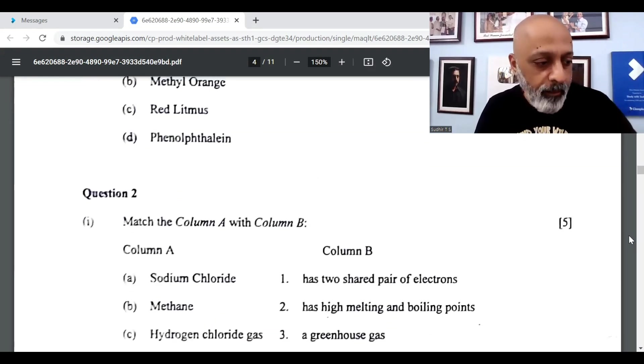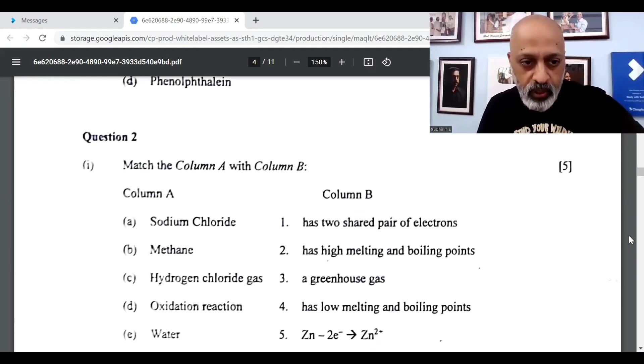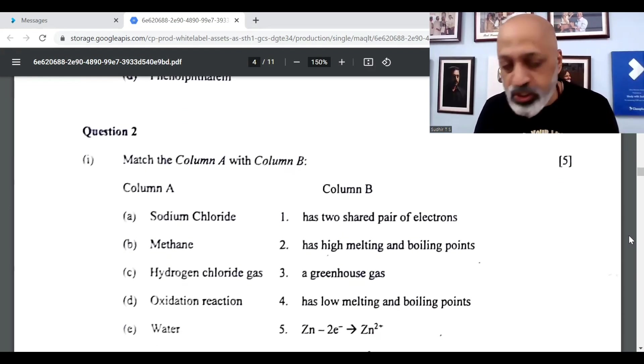A matches to 2, sodium chloride has high melting and boiling points. B matches to 3, methane is a greenhouse gas.